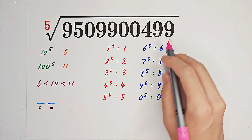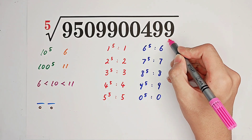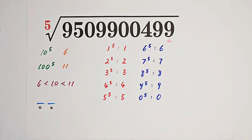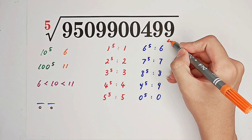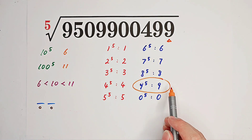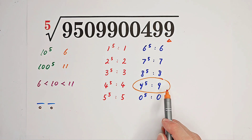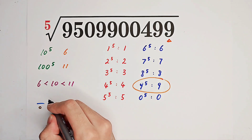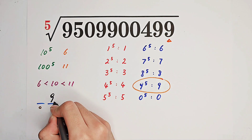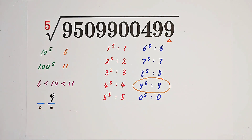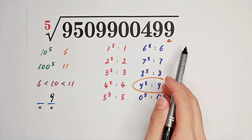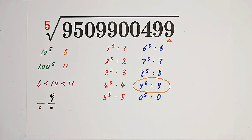So you get all of them after checking their unit digits. The unit digit of this number is 9. If the unit digit of a fifth power of a number is 9, then the unit digit of that number should be 9. So the unit digit of the result is 9 — it has the same unit digit as the number under the root. Now our second task is to figure out the tens digit.